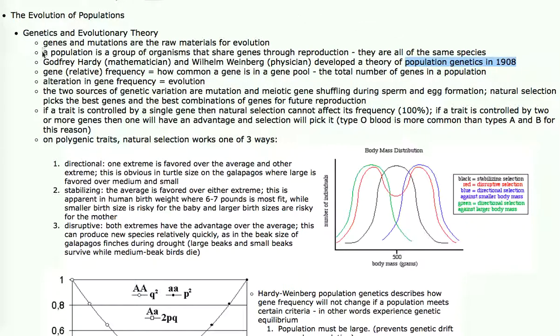Their premise was that a population is a group of life forms that share genes through reproduction. Because all members of the population are the same species, they can all interbreed and produce offspring.